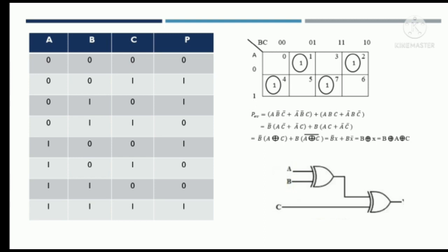The final equation for P is A XOR B XOR C. We need two XOR gates to construct the even parity generator. In the first XOR gate, inputs A and B are given to get the output A XOR B. That output is supplied as input to the second XOR gate along with C, resulting in the final output P = A XOR B XOR C.